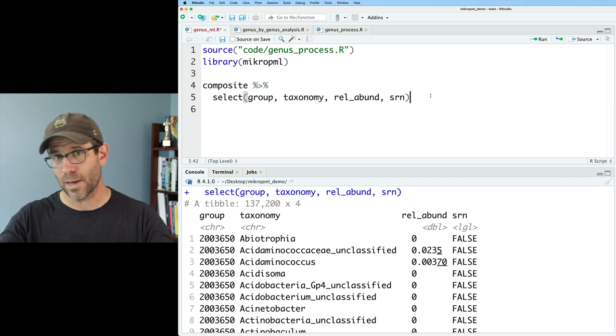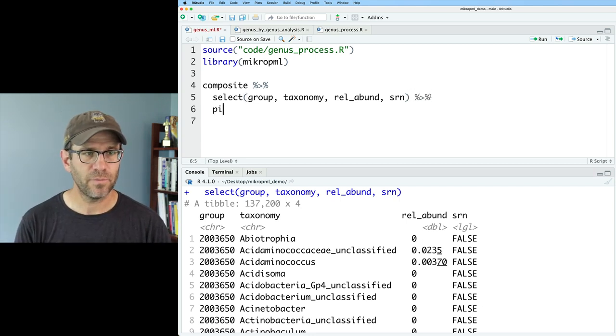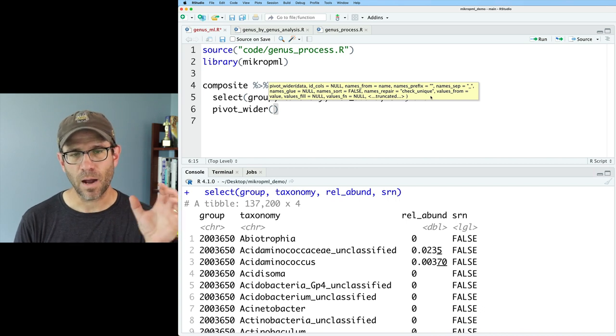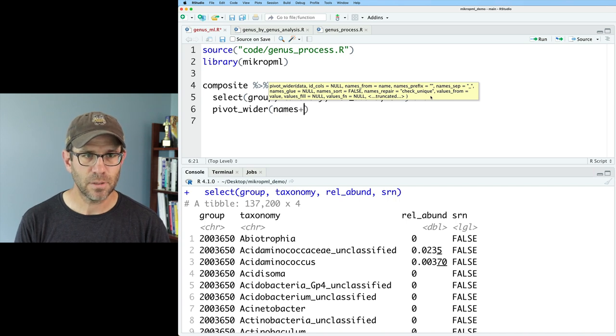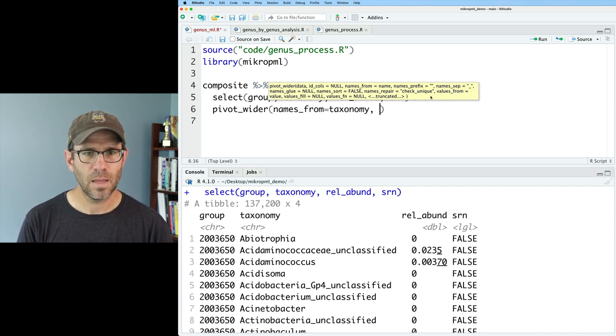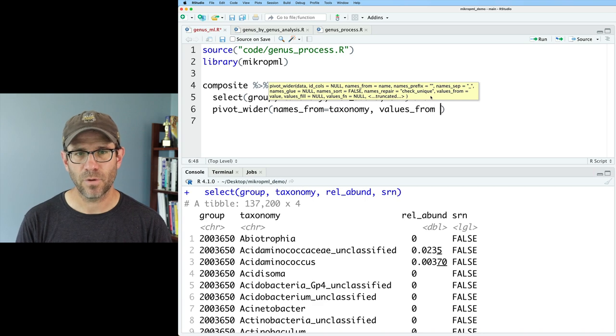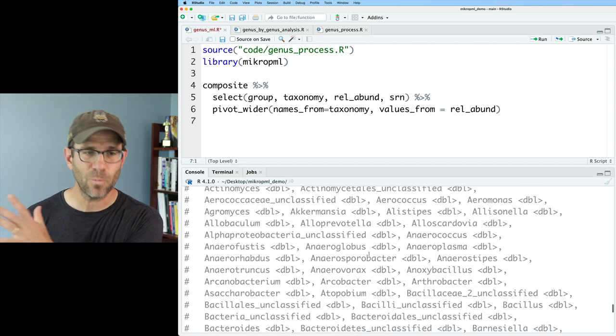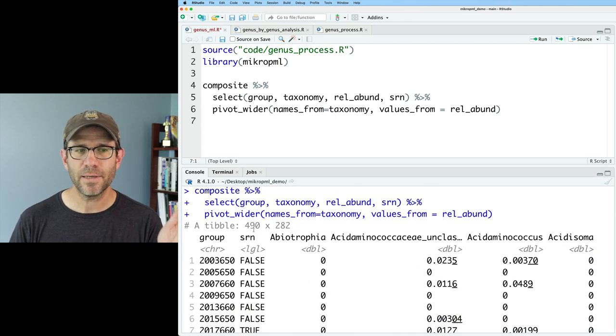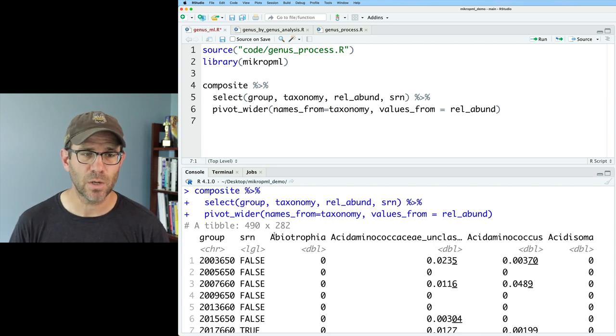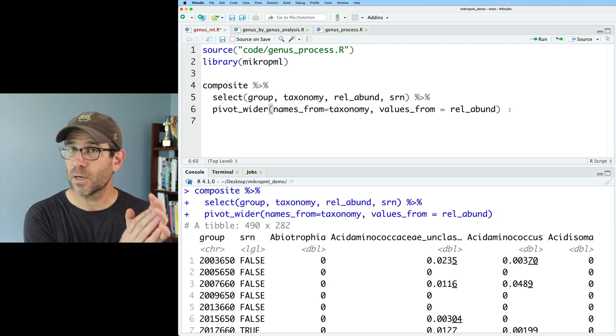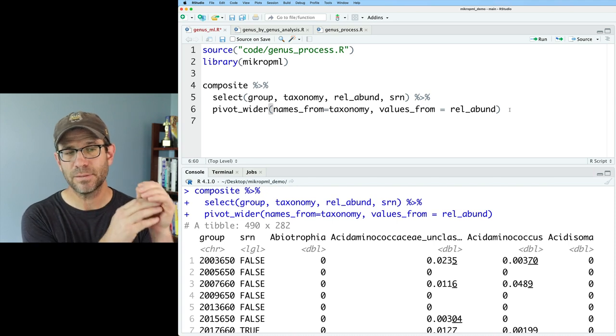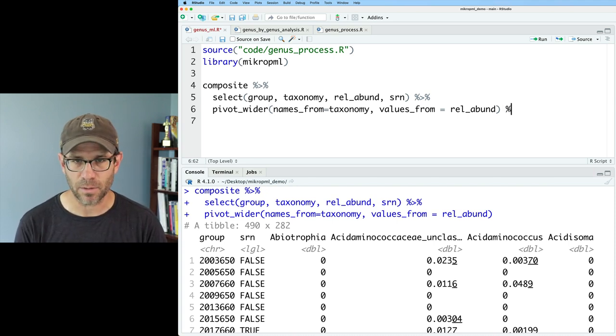So looking at my Git tab up here in the upper right, I see that it's got a D for a code genus_analysis.R. It's because I renamed it. So it looks like it deleted it. But then I replaced it with code genus_by_genus_analysis.R. So if I click staged for both of those files, it then shows that it's renamed it. I'll also then go ahead and click on that staged for genus_process.R. And I'll go ahead and commit this to say, reorganize code to make dry. Because otherwise, I'd be taking that same code that was in genus_process.R and copying and pasting it over and over again.